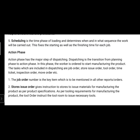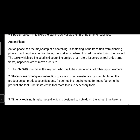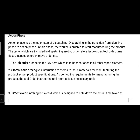The action phase has one major step: dispatching. Dispatching is the transition from planning phase to action phase, in which the worker is ordered to start manufacturing the product. The tasks included in dispatching are: job order, store issue order, tool order, time ticket, inspection order, move order, etc.